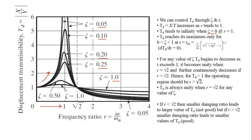Peaks will be observed only for underdamped cases, that is, zeta less than 1, and these peaks will appear at the frequency ratio value of r = (1 / (2*zeta)) * sqrt(1 + 8*zeta^2 - 1)^(1/2). At this value of r on the horizontal axis you will observe these peaks, and you can see that these peaks occur slightly before r equals 1.